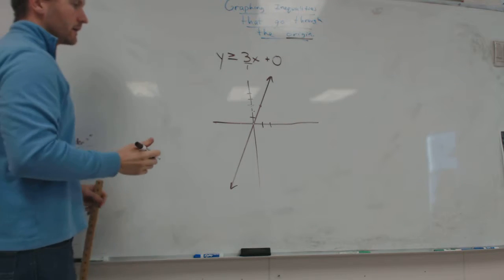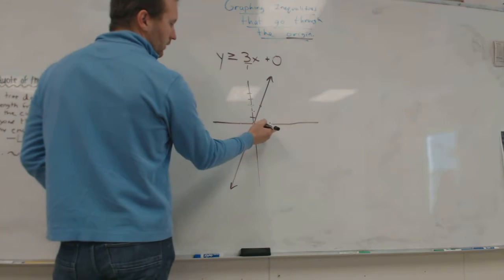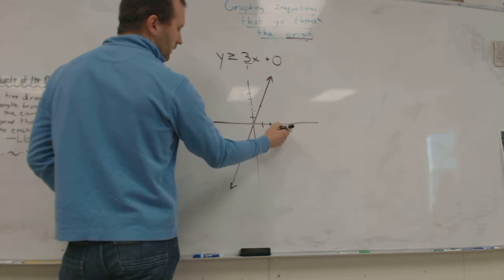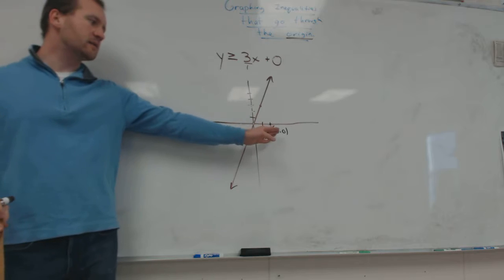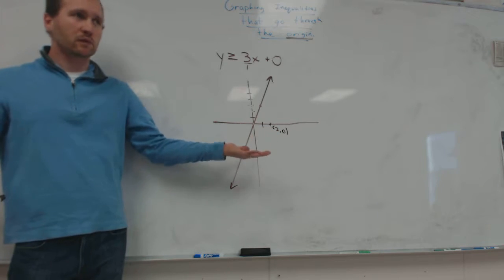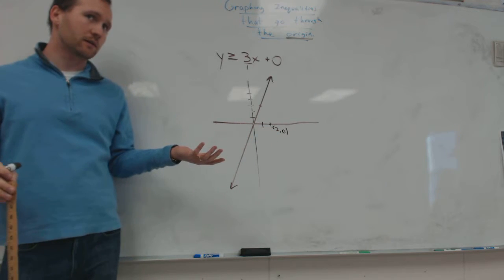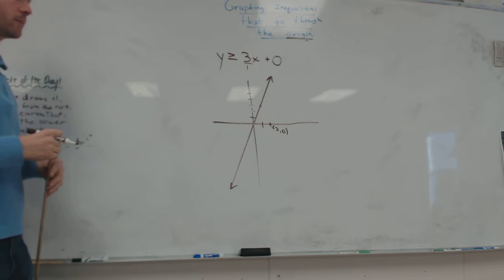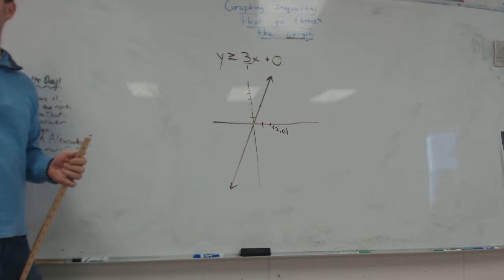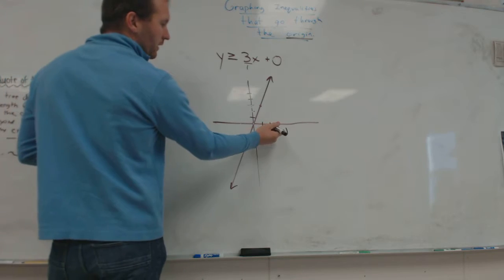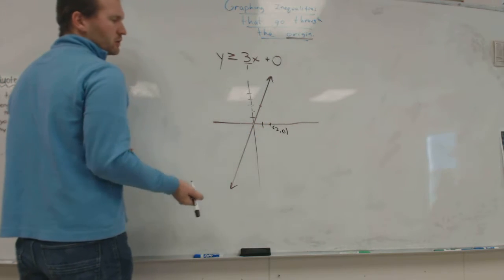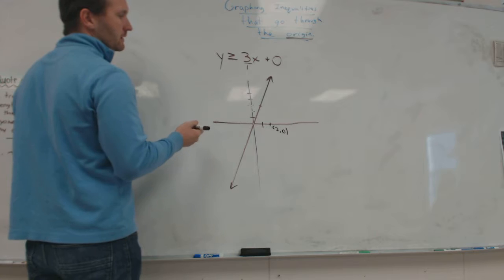So you could pick something like 2, 0. It still has one 0 in it. So it's going to make it a little bit easier still. It doesn't really matter which point you pick. You can choose any point you want. But make sure you remember where your point is. I'm going to choose 2, 0. Just because I think that's pretty easy.